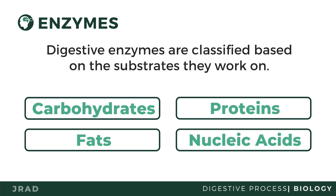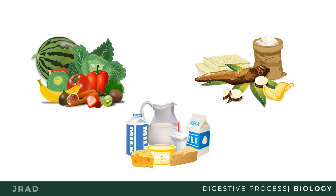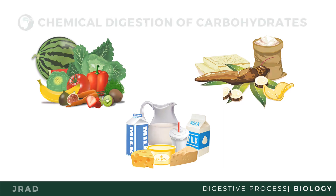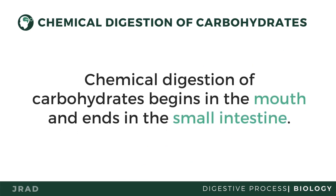A lot of us are familiar with carbohydrates. Carbohydrates are the sugars, starches, and fibers found in fruits, grains, vegetables, and milk products. Chemical digestion of carbohydrates begins in the mouth and ends in the small intestine.